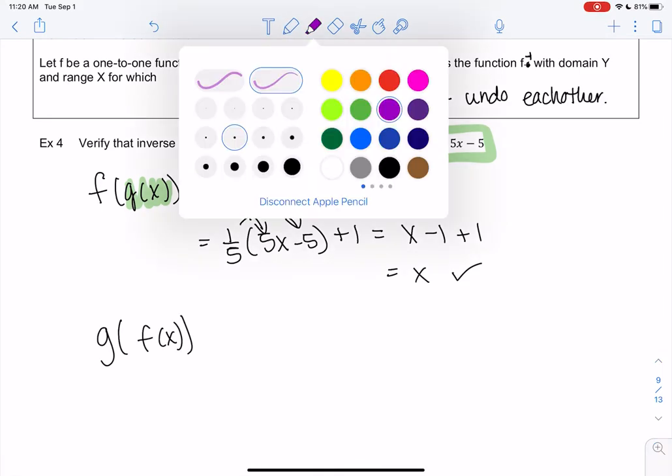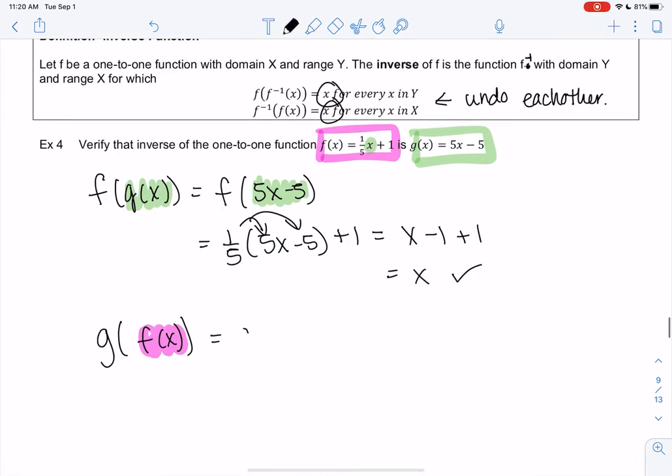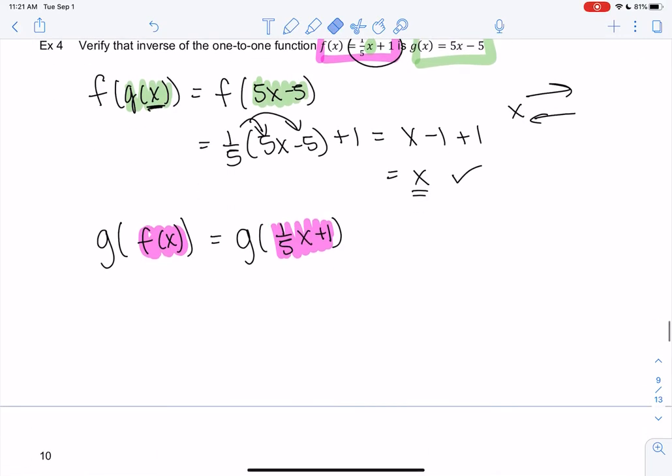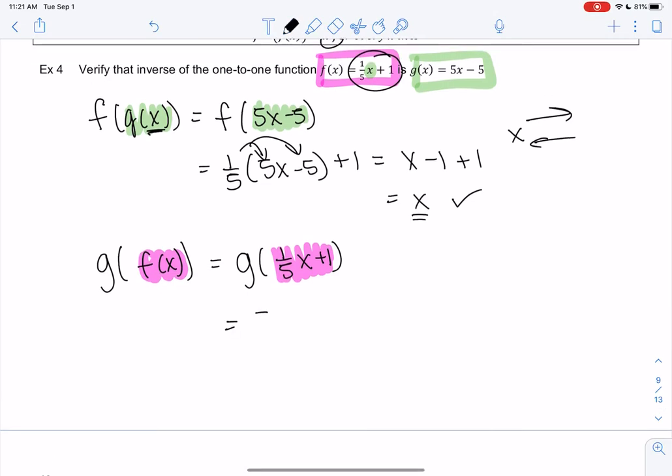Now let's plug f into g. We're going to plug f—one-fifth x plus 1—into g. By getting x, we're basically saying we're undoing each other. We go over and back and end up with x. Let's plug that in. g is 5x minus 5, so now it's 5 times all of this minus 5. Distributing, I get x plus 5 minus 5, which equals x. So they're inverses. This is our math proof to prove an inverse.